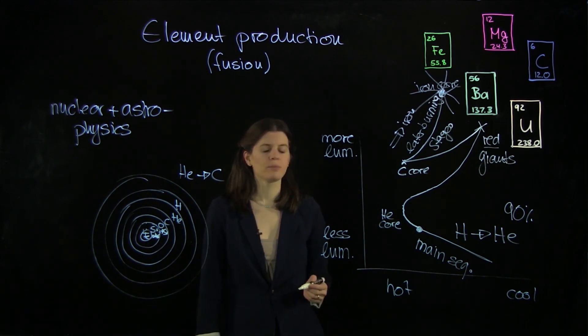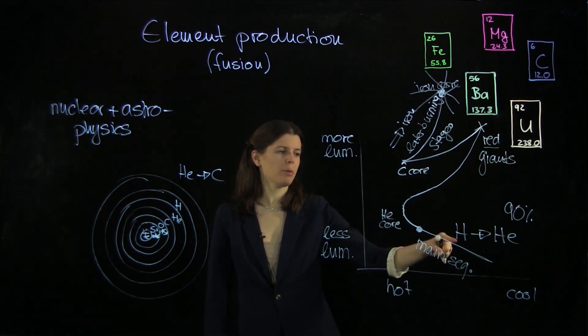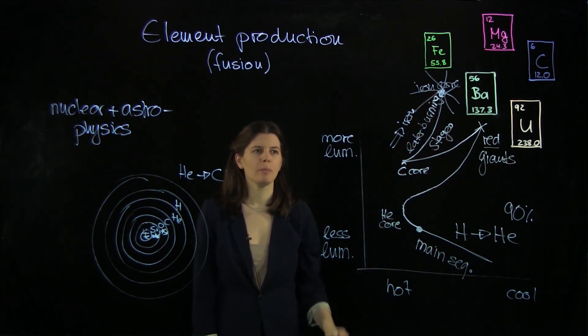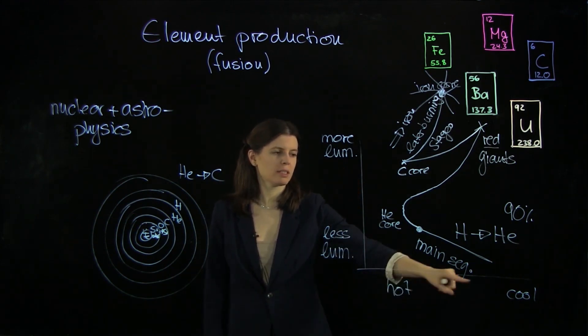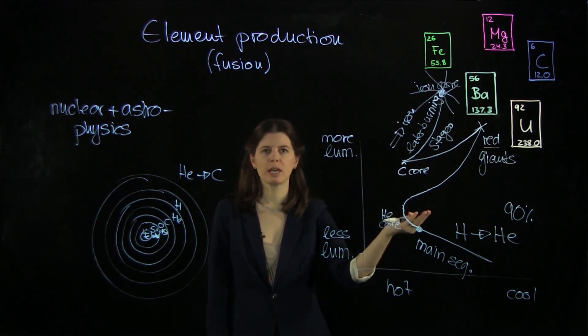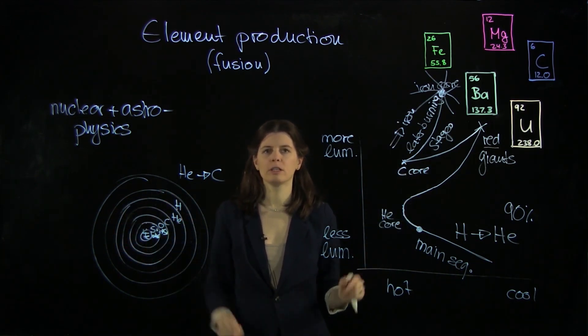So what you see here is that whatever is happening in the core has a direct impact of where the object sits on this diagram here. And so by measuring the luminosity of a star as well as its temperature, we can place it on this diagram and then learn in which evolutionary state the star is currently in, which tells us what is going on in its core.